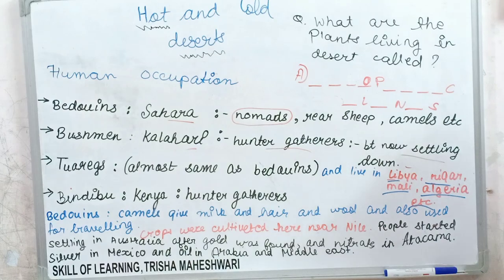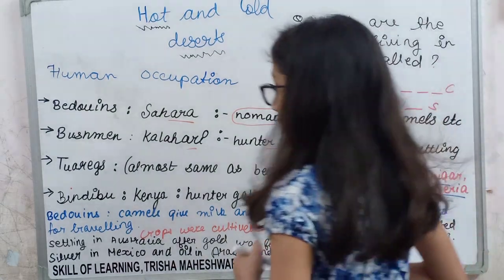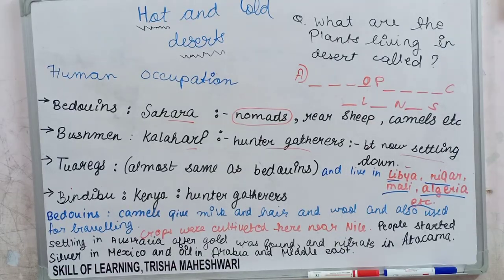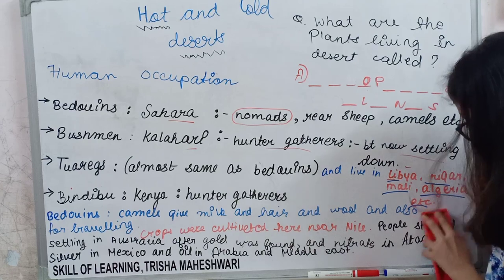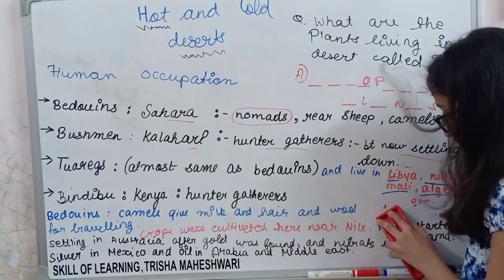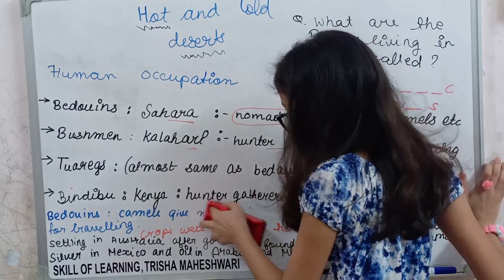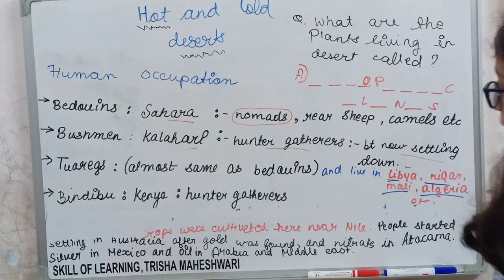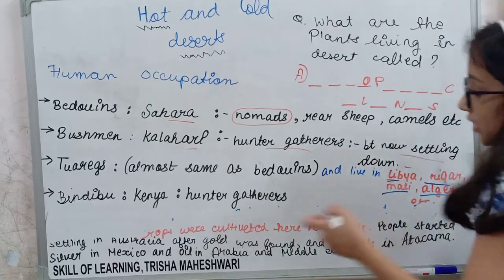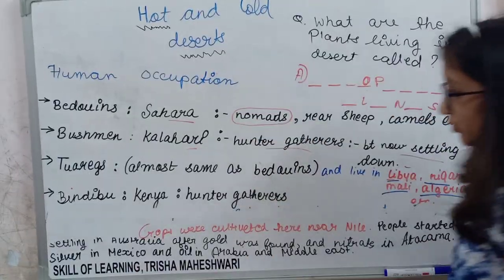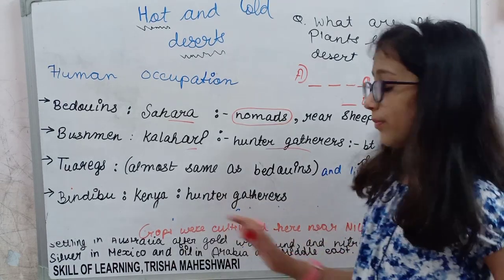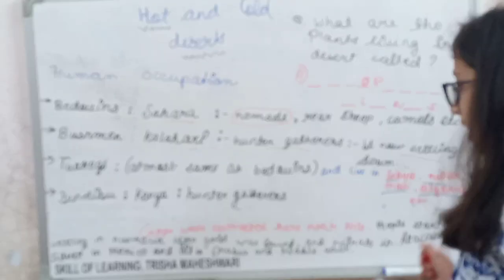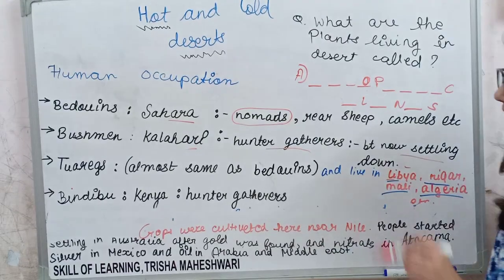Camels give milk, hair, and wool, and are also used for traveling. Crops were cultivated near the Nile River. People were also living in Australia — and then people came to certain desert areas.